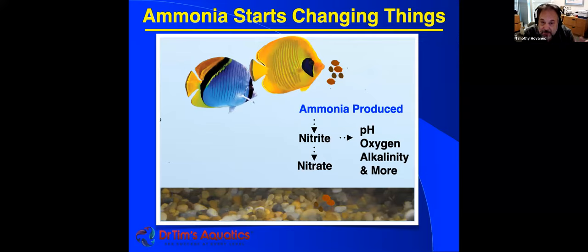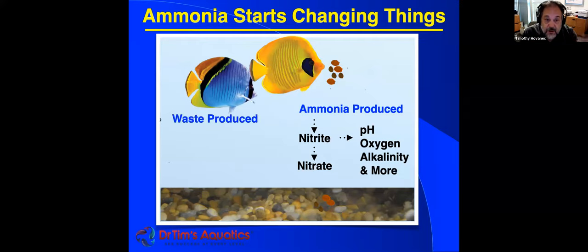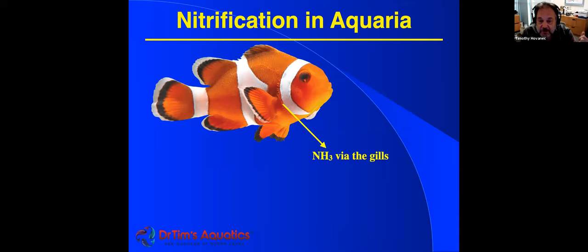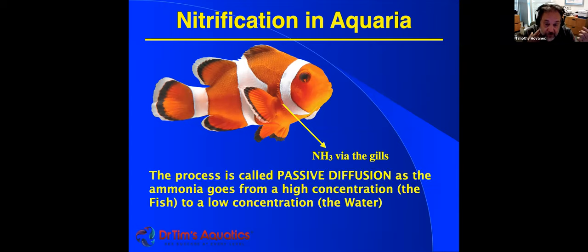Obviously, the more fish, the more food, the more ammonia produced, and the more nitrite and nitrate. You also have organic waste from fish and uneaten food in the substrate that bacteria mineralize back into ammonia. Ammonia is excreted as NH3 from the gills through passive diffusion — no energy required. It goes from the high concentration inside the fish to the low concentration of the water.